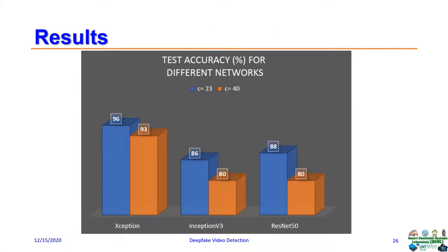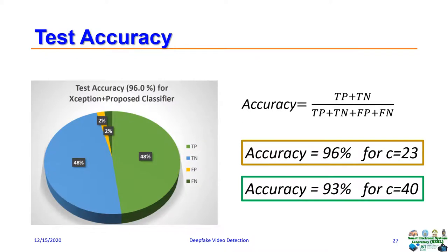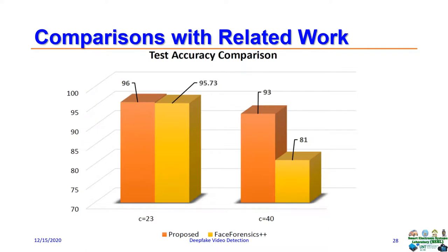This slide shows the accuracies we got for different CNNs and for different compression levels. Xception network outperforms the other two networks for both compression levels. We got accuracies of 96% for medium-level compression and 93% for highly compressed video. A comparative study between our work and the FaceForensics++ paper's work shows that use of our classifier network increased overall accuracy significantly — a 12% increase in accuracy for highly compressed videos.